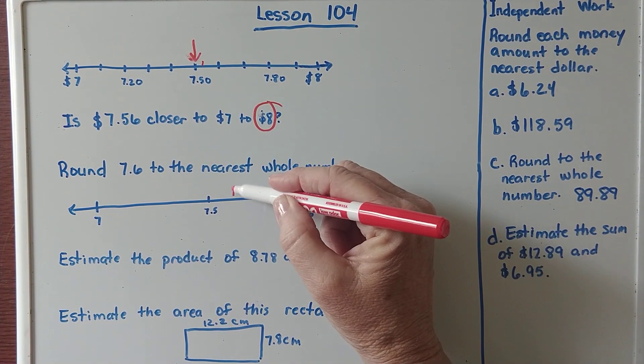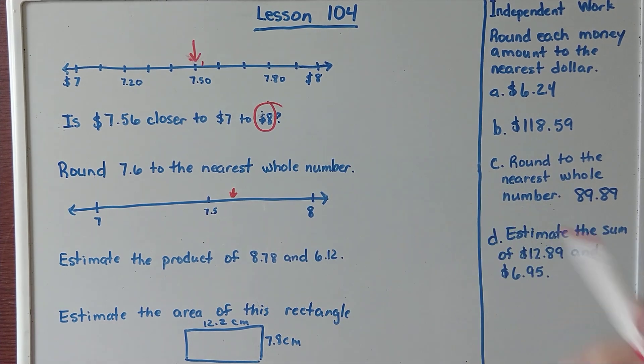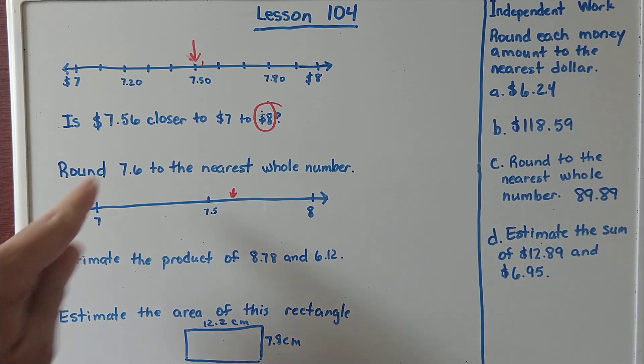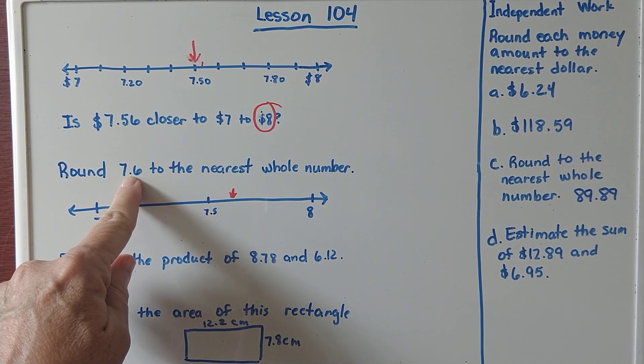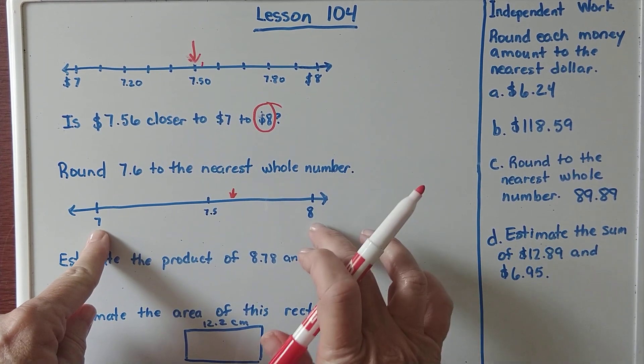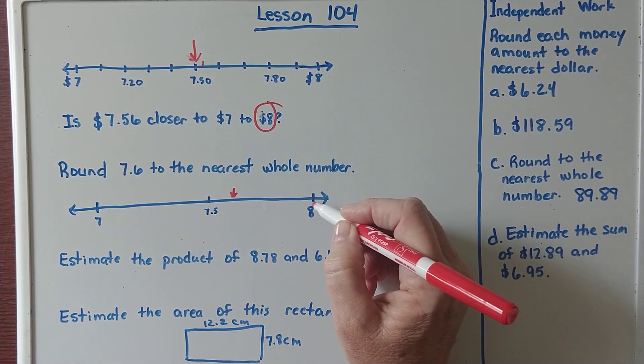It would probably be right around here. What is 7 and 6 tenths closer to? What whole number is it closer to? Is it closer to 7 or closer to 8? It would be closer to 8.